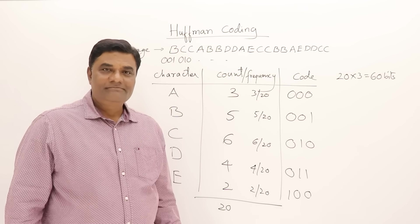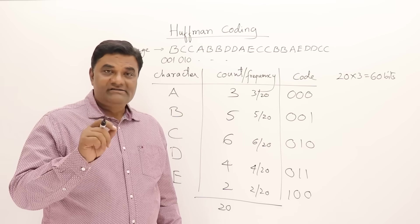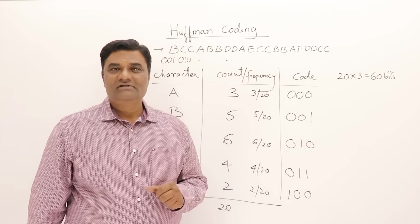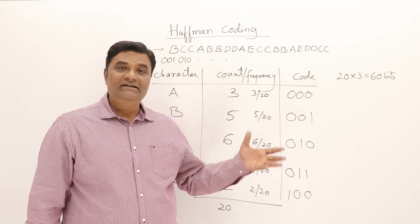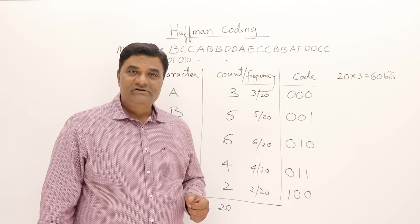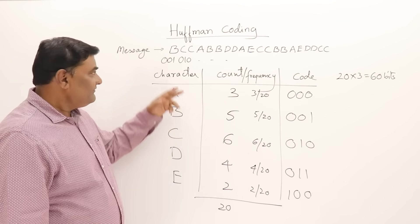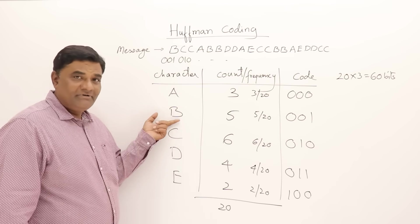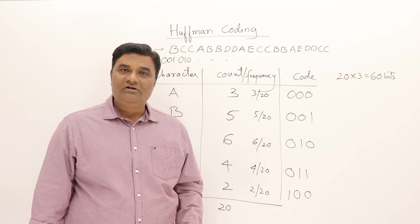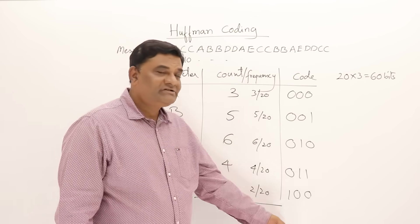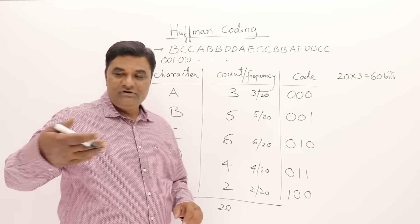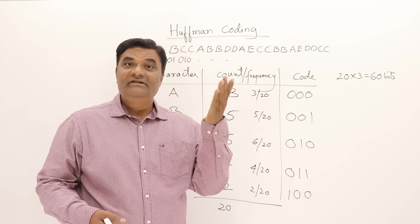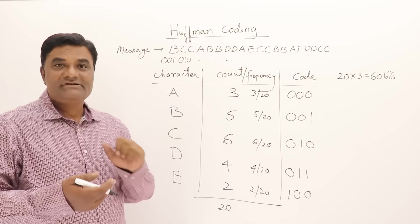The size of the message will be 60 bits, but there is one more important thing we cannot neglect. When I send the encoded message, how will the receiver know what the codes mean? Even if I store it in a file and want to retrieve it later, how do I remember which code is for which character? So I must also send the code table along with the message — this table is used to decode the message.